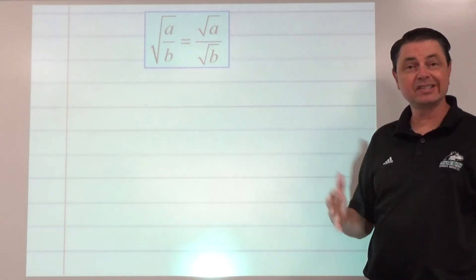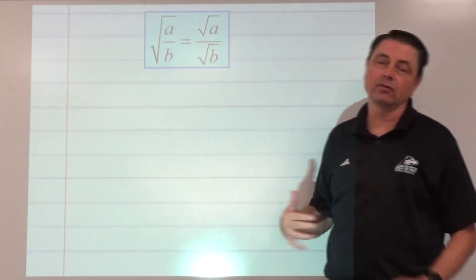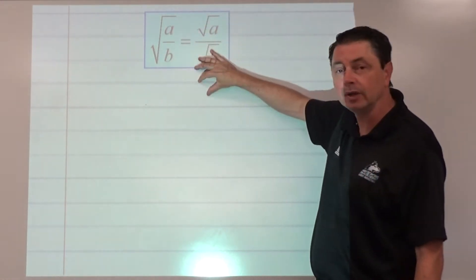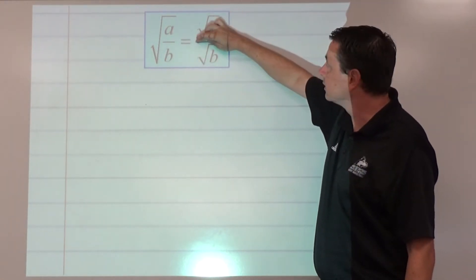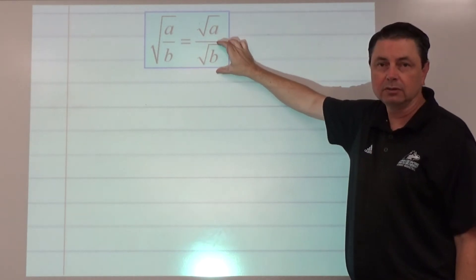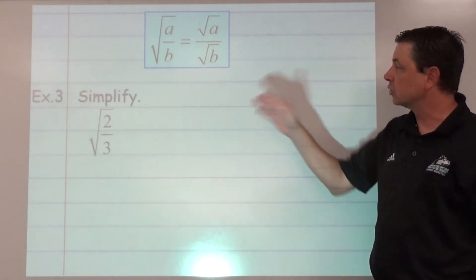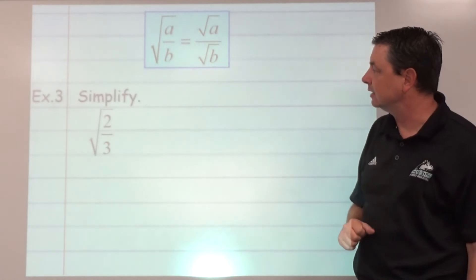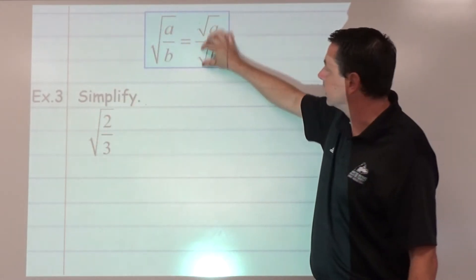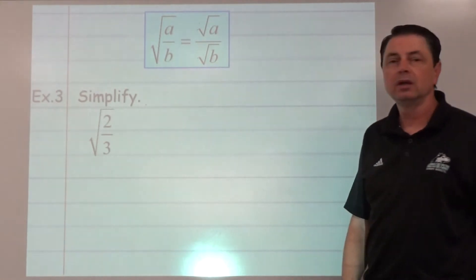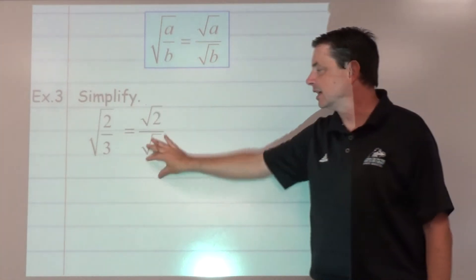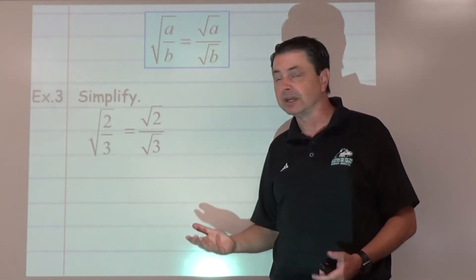There's also a similar property for division. If we're handling square roots of fractions, we can break it up: square root of the numerator divided by the square root of the denominator. For example, number 3 — to simplify, we've got a square root of a fraction. We're going to break it up: square root top, square root bottom, numerator, denominator. Our issue is we would like to rationalize the denominator.